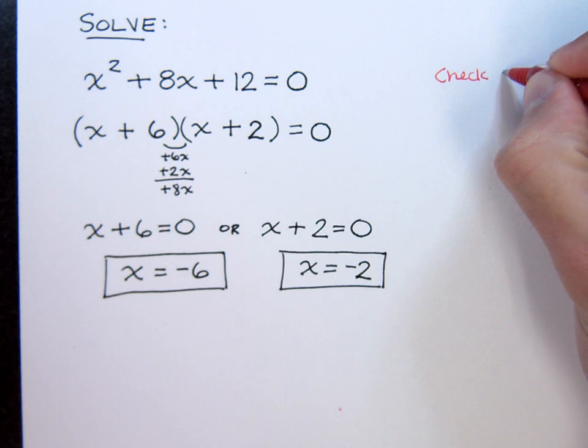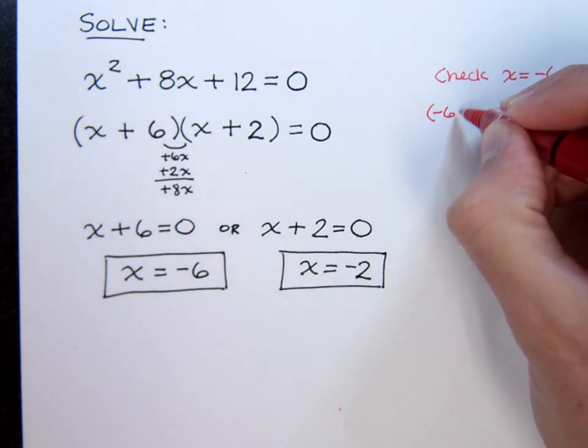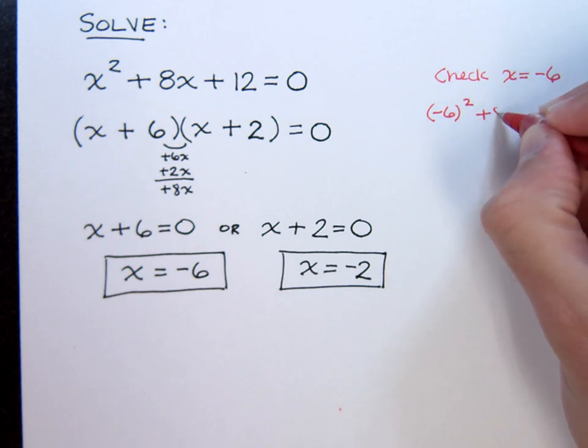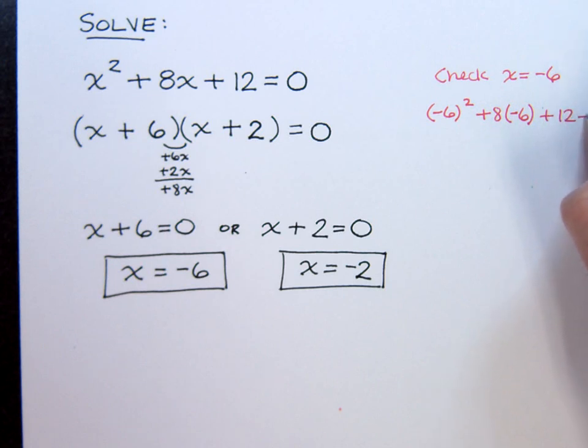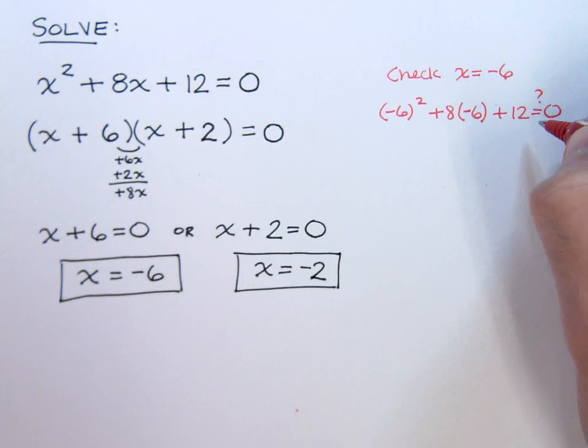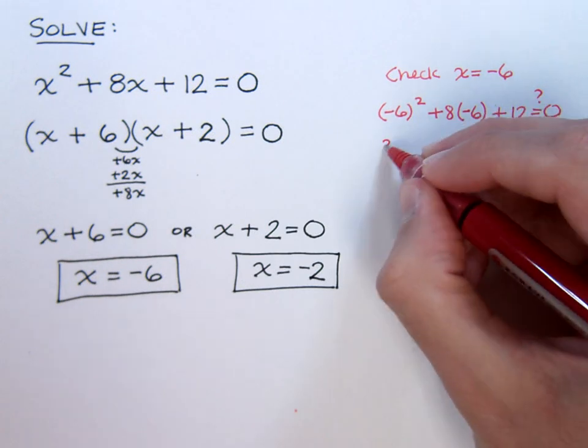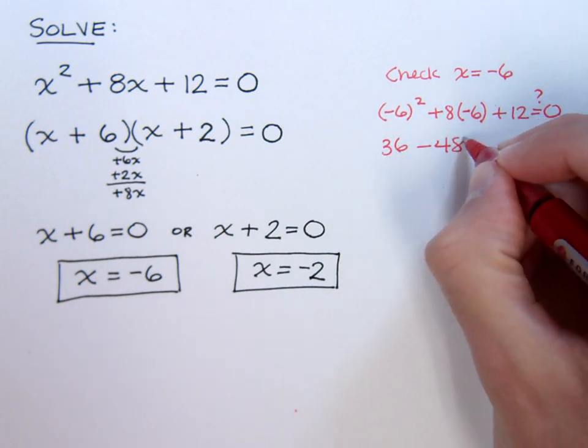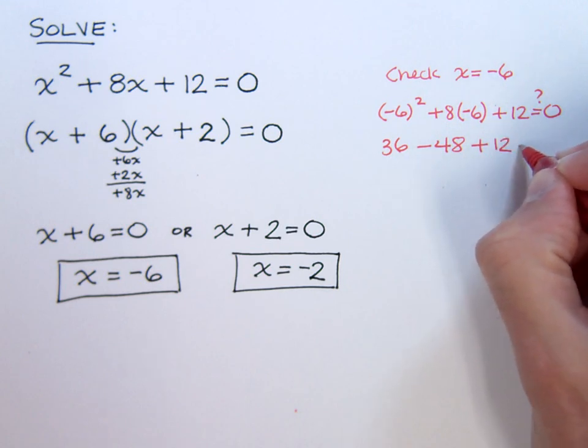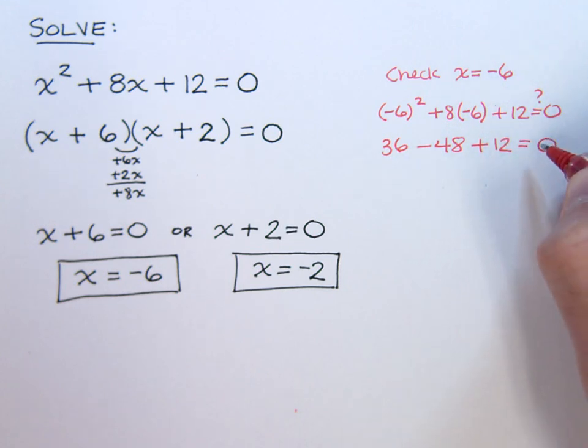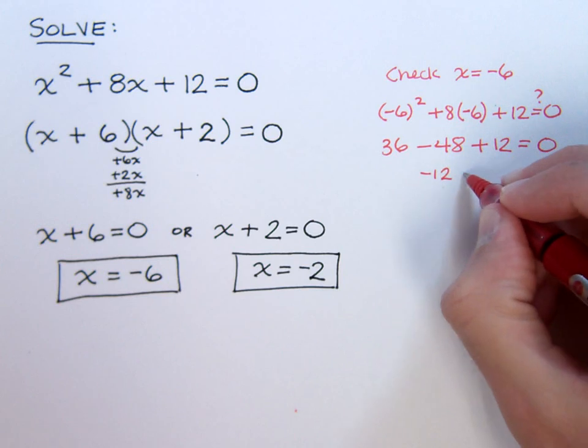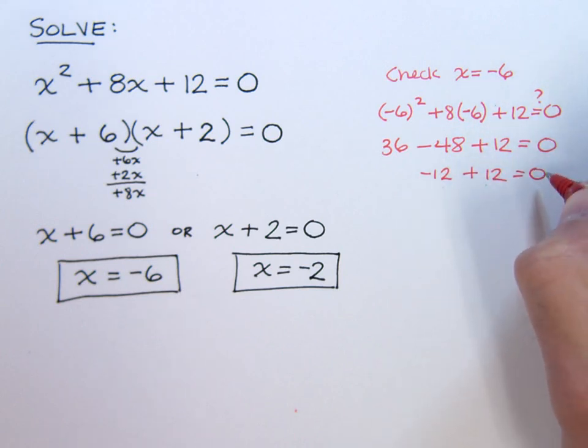So when I check x equals negative 6, I need to see if negative 6 squared plus 8 times negative 6 plus 12 is equal to 0. We need to find out is this going to be true. Well this is 36 minus 48 plus 12. And yes, we can see that this is going to give me 0. Negative 12 plus 12 is 0. So this guy checks out.